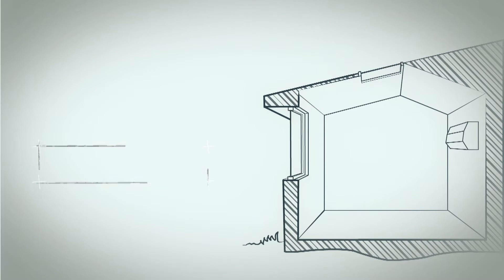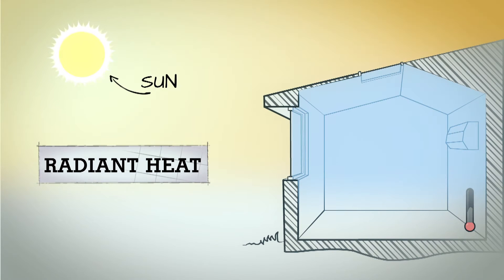The primary source of radiant heat is the sun and enters the house mainly through the roof and windows. Building material will absorb radiant heat and re-radiate in all directions. Heat is always transferred to cooler areas.